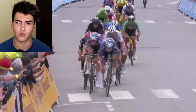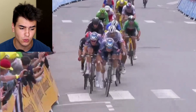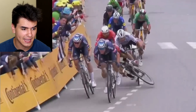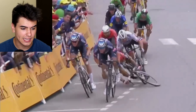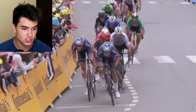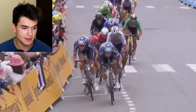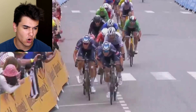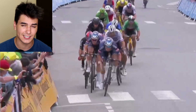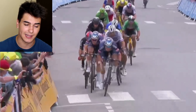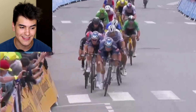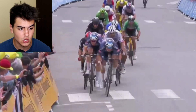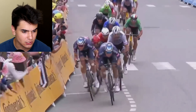We're going to take a look at the crash right now. Watching it frame by frame, it seems that Caleb Ewing touches Tim Mellier's back wheel, but it's hard to see whether or not Sagan nudged him a little bit and threw him off course — and that's what made him overlap wheels with Tim Mellier.